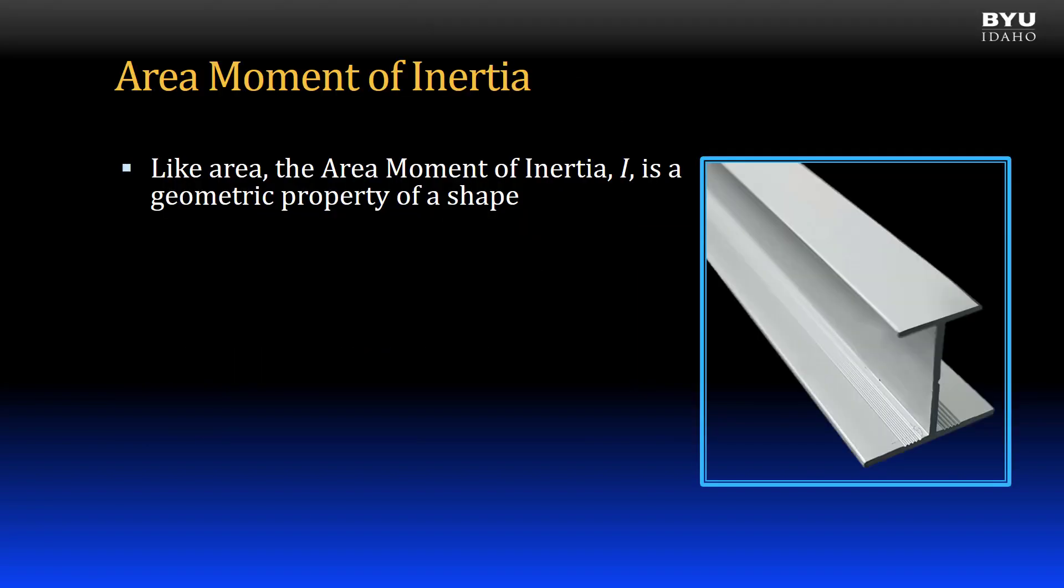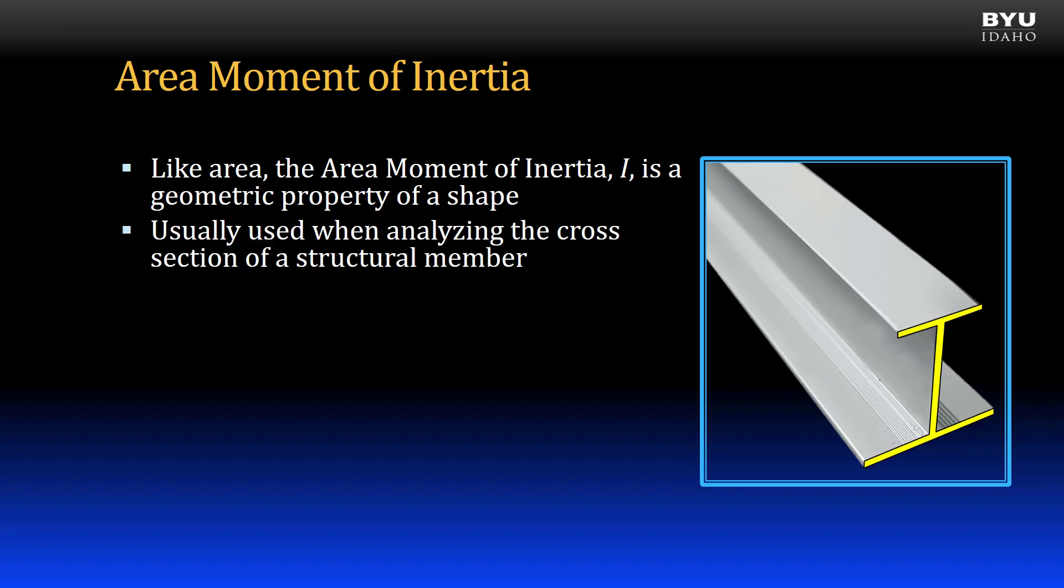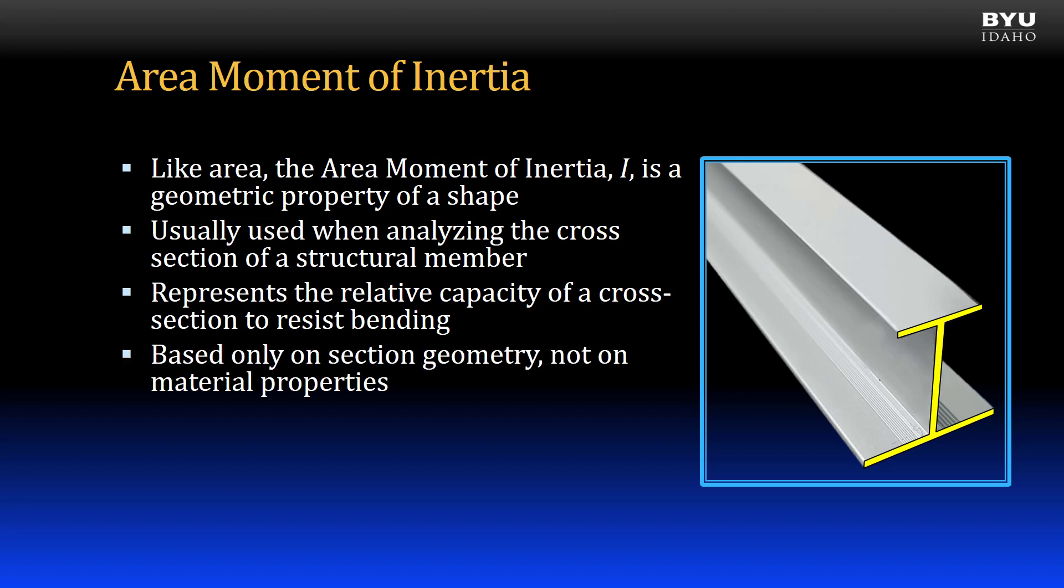The area moment of inertia, given the symbol uppercase I, is a geometric property of a shape similar to the area of a shape. It is usually used when analyzing the cross-section of a structural member. The area moment of inertia represents the relative capacity of a cross-section to resist bending. Like area, it is based only on section geometry and not on material properties.